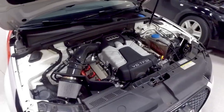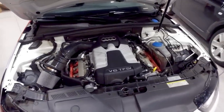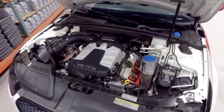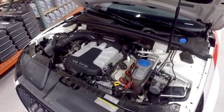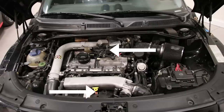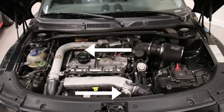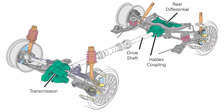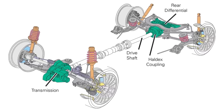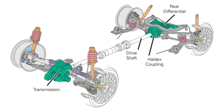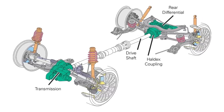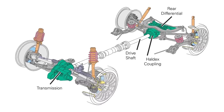Due to this design, the engine and transmission are shifted further forward as the front differential and axles must mount to the transmission. Haldex vehicles use transversely mounted engines and transmissions. Since the center differential isn't required, the system will have a driveshaft that runs to the rear of the vehicle with an open differential at the front and rear.